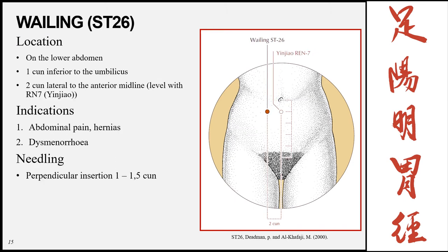Wailing, Stomach 26, is on the lower abdomen, 1 cun inferior to the umbilicus and 2 cun lateral to the midline. It can be used for abdominal pain, hernias, and dysmenorrhea. Insertion is perpendicular, 1 to 1.5 cun.